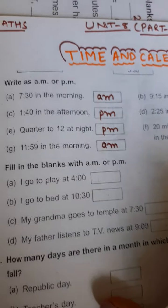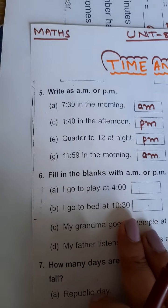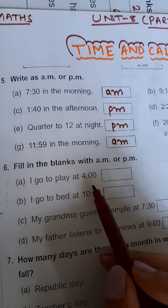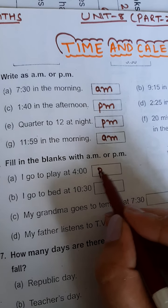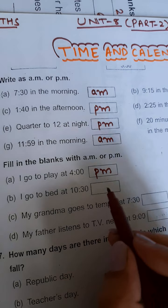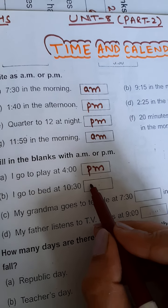Now fill in the blanks with AM or PM. I go to play at 4 - you will play in the evening, so 4 PM. I go to bed at 10:30 - you will sleep at night, so PM.